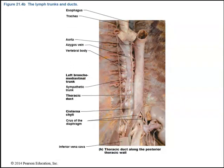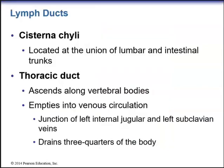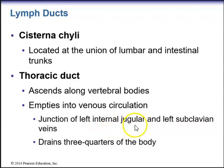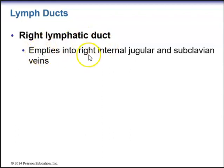Here is a gross picture of some of the different trunks — we can see the left bronchomediastinal trunk and the left part of the thoracic duct. We have the cisterna chyli located at the union of the lumbar and intestinal trunks. The thoracic duct ascends along the vertebral bodies and empties into the venous circulation at the junction of the left internal jugular vein and left subclavian vein. The thoracic duct drains three quarters of the body. The right lymphatic duct empties into the right internal jugular and subclavian veins.